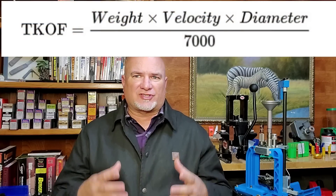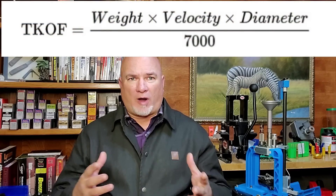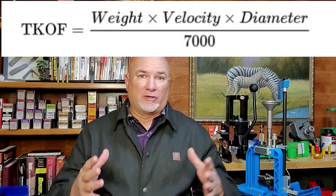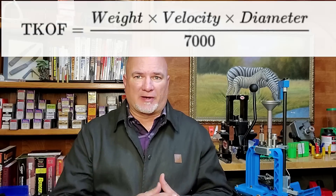We usually reference foot-pounds of kinetic energy when hunters talk about killing power. We know it's not the perfect metric — or even close to perfect — but unfortunately it's kind of the best thing we have at this time. The Taylor KO, or knockout formula, was the first serious attempt to quantify killing power of cartridges on big game animals, but as bullet design got better, we found flaws in Taylor's formula.